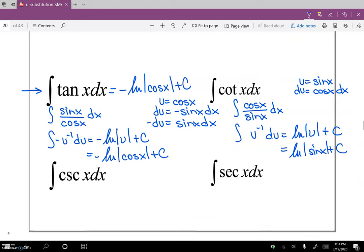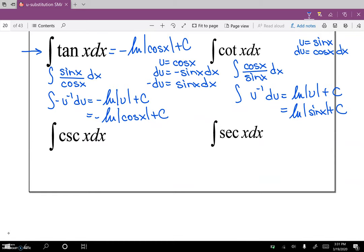Now, cosecant and secant, they're a little bit more of a handful. And you know what? I don't think at this time I'm going to go ahead and do that. But we'll just make sure we look at our rule sheet and know that the integral of cosecant is negative the natural log of the absolute value of cosecant x plus cotangent x plus c. And then, make sure you look at the integral of secant, because it's a doozy also.